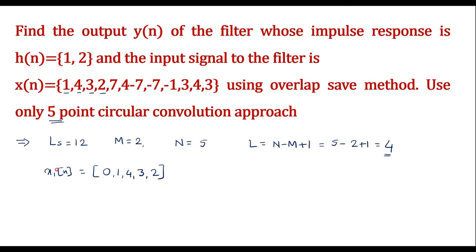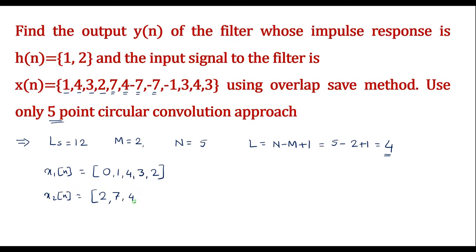So x1[n] = {0, 1, 4, 3, 2}, which has a total of 5 samples. Now to write x2[n], this sub-block consists of the last m-1 samples of x1[n]. Here m equals 2, so the last 1 sample of x1[n] is 2. So 2 is written first, followed by the next 4 samples of x[n], which are 7, 4, -7, -7. So x2[n] = {2, 7, 4, -7, -7}, again 5 samples.